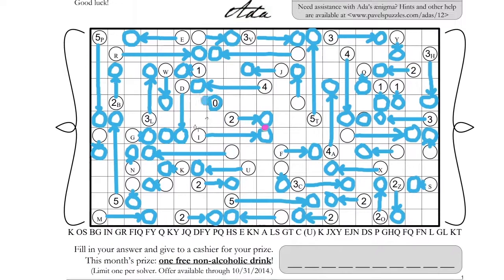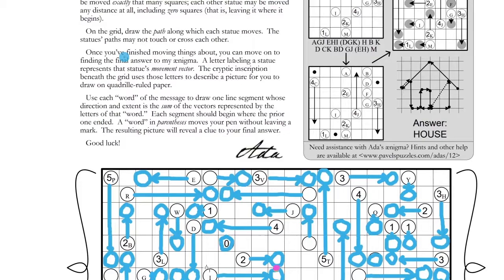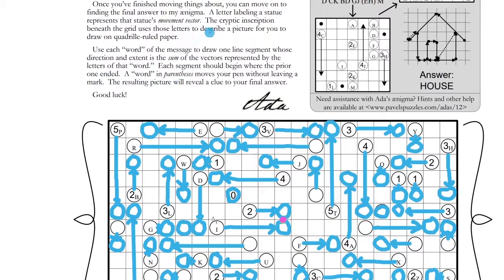I guess now to find out what on earth this thing was saying. 'Once you've finished moving things about, you can move on to find the final answer to my enigma. A letter labeling a statue versus the statue's movement vector.' Okay, I'll just take that for whatever it means. Movement vector — the cryptic inscription beneath the grid uses those letters to describe a picture for you to draw on quadrilled paper.